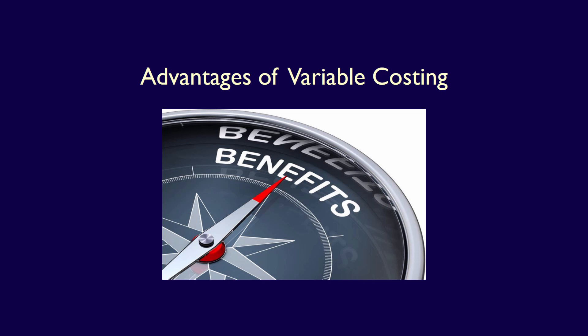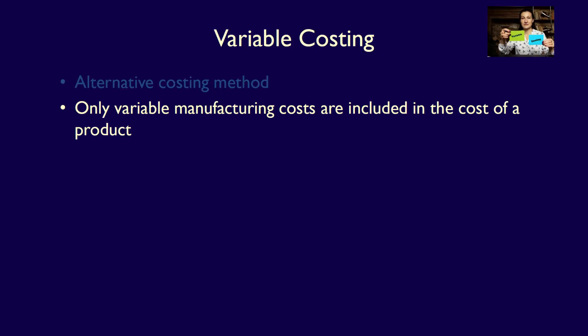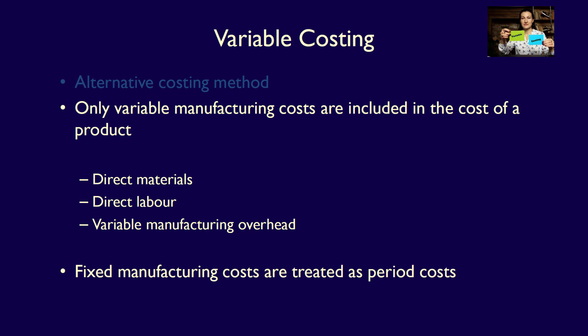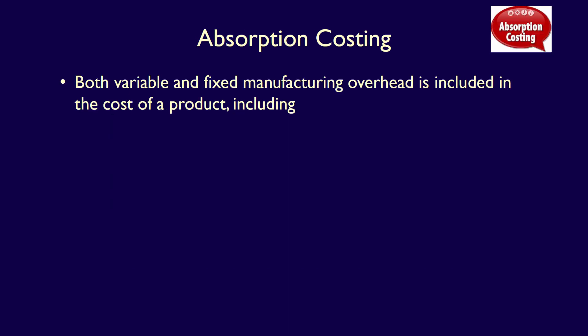In this video, we're going to discuss the advantages of variable costing. Recall that under variable costing, only variable manufacturing costs are considered appropriate product costs, including direct materials, direct labour, and variable manufacturing overhead. All the fixed manufacturing costs are treated as period costs, expensed immediately as they are incurred.